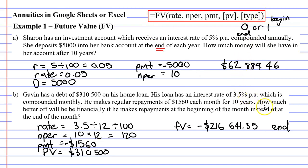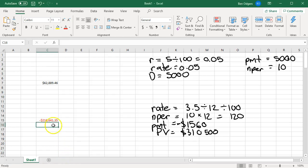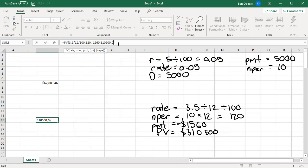Now if you look at the question, it says how much better off will he be financially if he makes repayments at the beginning of the month instead of at the end of the month. So we also need to see what happens when we make repayments at the beginning of the month. So we go back to Excel, click on our cell here, and change our zero up above to a one, and then press enter.